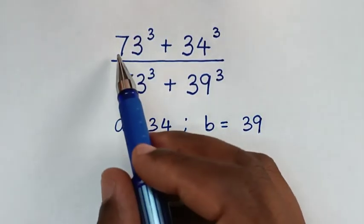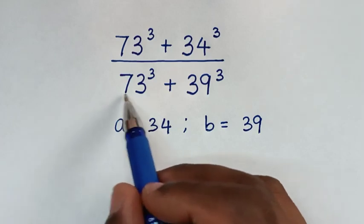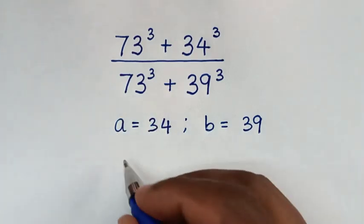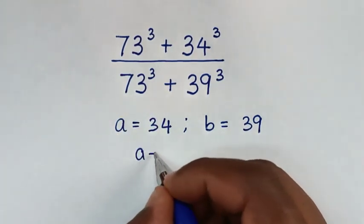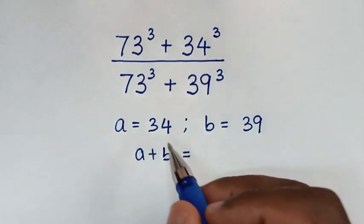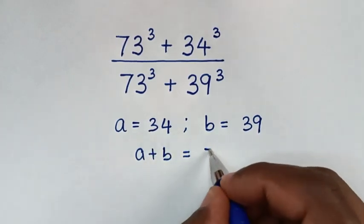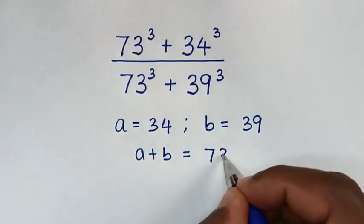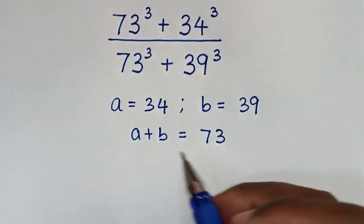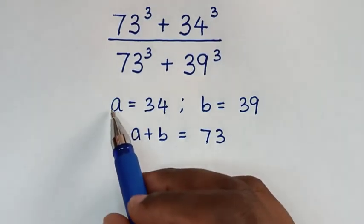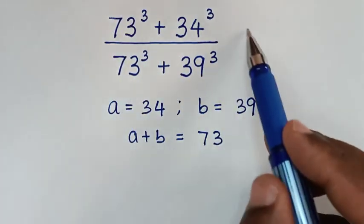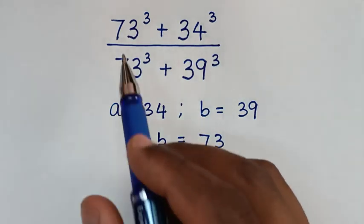Then, from this 73 and this 73, the sum of A plus B is equal to 34 plus 39, it is 73. Then, we'll substitute these letters A, B, and A plus B into this expression.